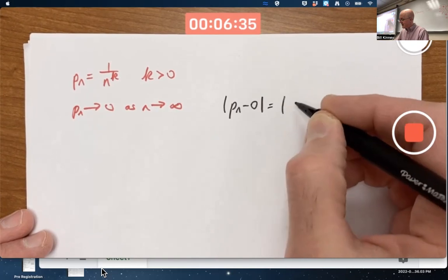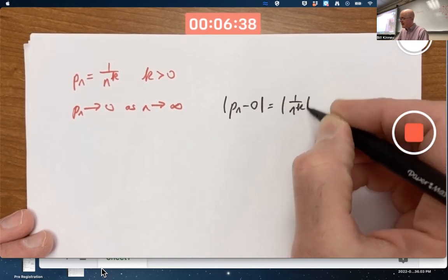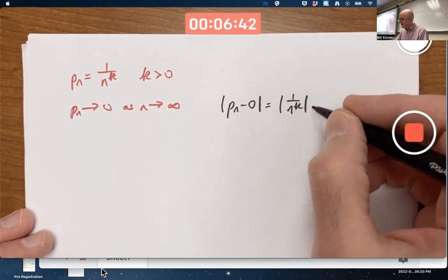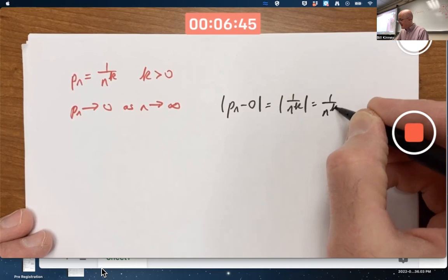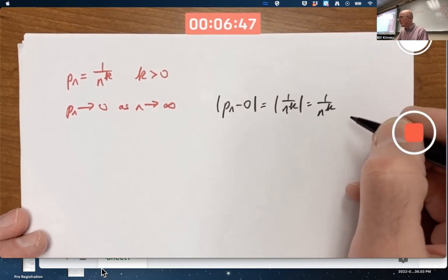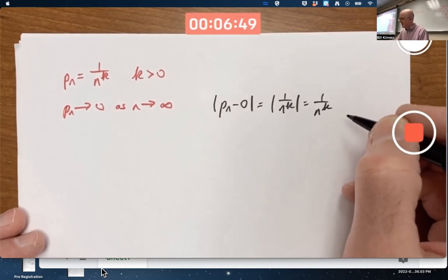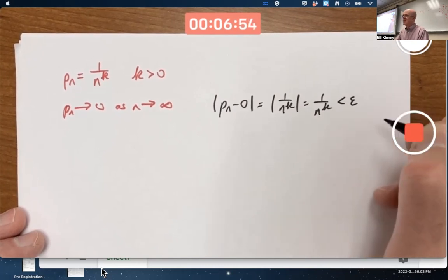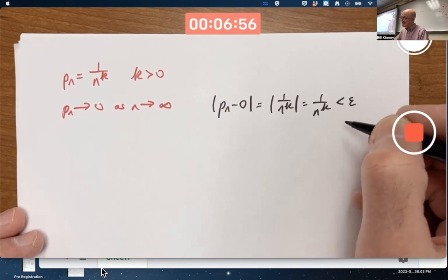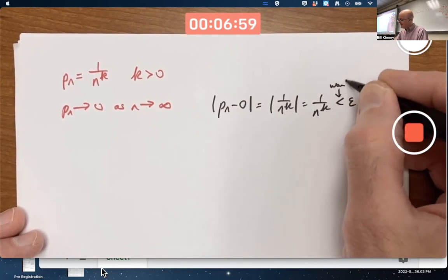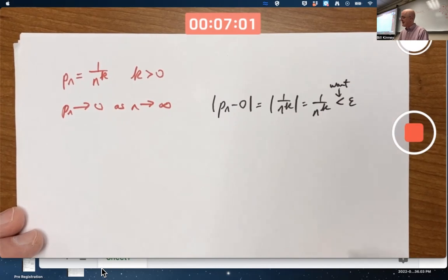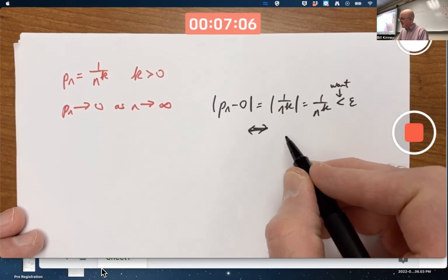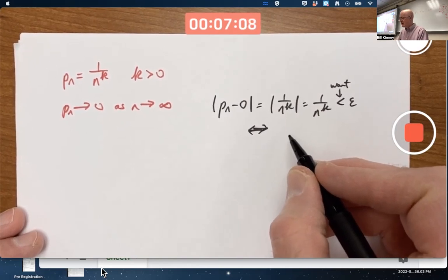Subtract 0 and you just get pn. k here, again, by the way, is fixed, a fixed positive number. These things are positive, so you can get rid of the absolute value signs. If you were going to prove more rigorously that this goes to 0, you'd want to choose n large enough to make this less than an arbitrarily given epsilon. I'm really just doing scratch work here. I'm not really doing a proof.